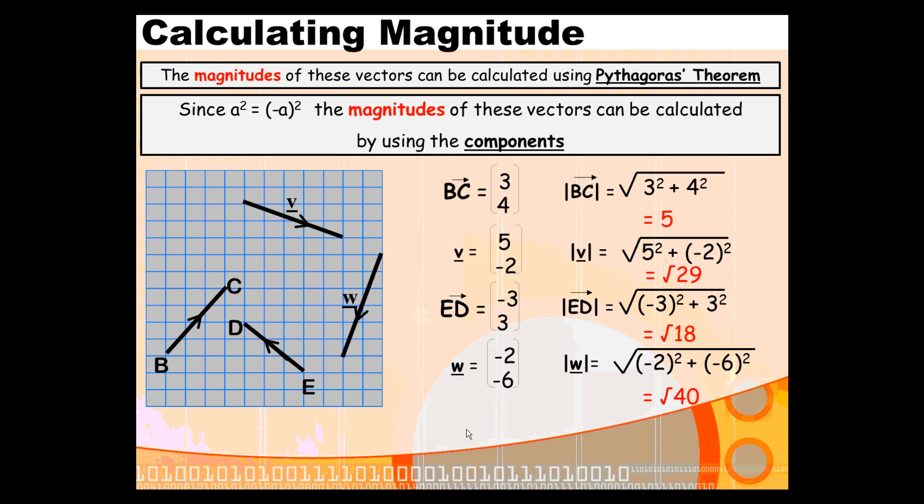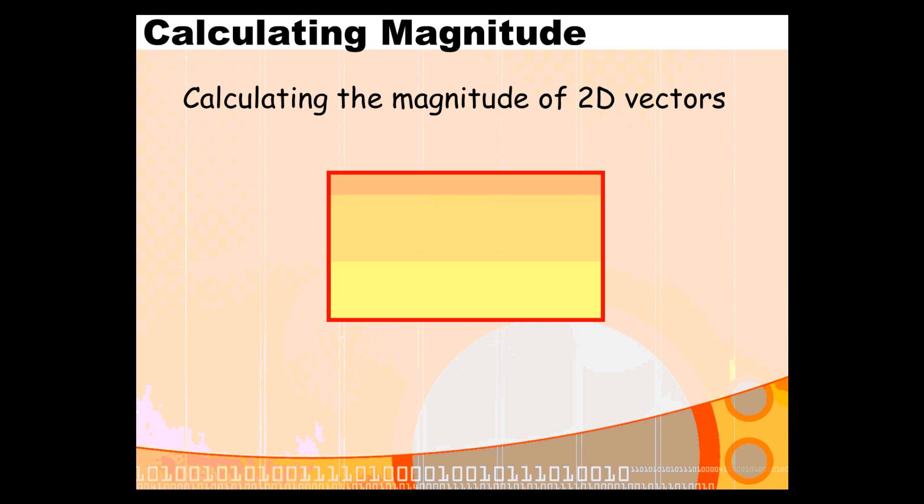That's how you find the magnitude of a 2D vector. It's dead easy, just use Pythagoras. To sum up, take your components, apply Pythagoras theorem to them, and you get the magnitude, remembering to use proper and correct notation.